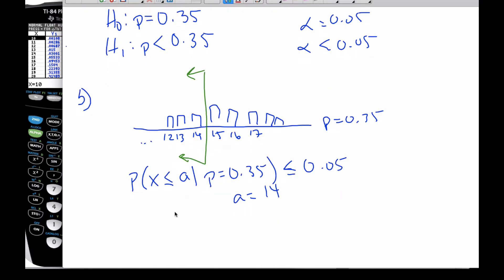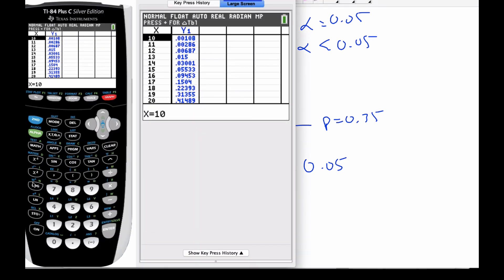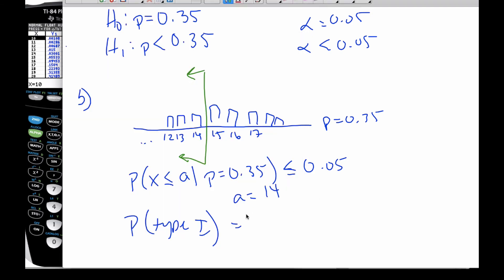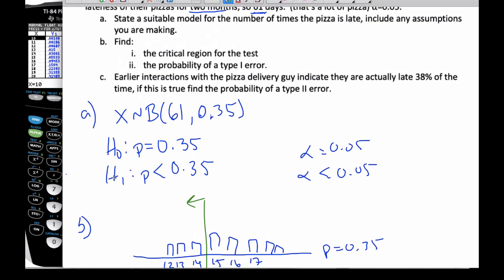My probability of a Type 1 error is going to be, simply, looking at here, is going to be 0.03001. So, 0.03 is my probability of a Type 1 error. All these little bars added up. That is my critical region and probability of a Type 1 error.